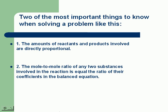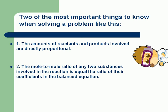Two of the most important things to know when solving a stoichiometry problem like this: 1. The amounts of reactants and products involved are directly proportional. This means that the mole-to-mole ratio of any two substances involved in the reaction is constant.